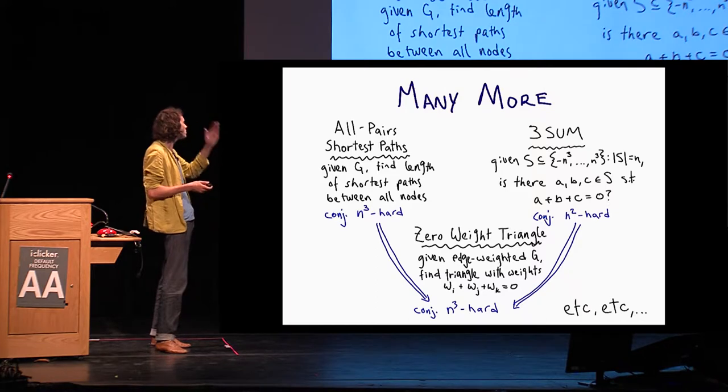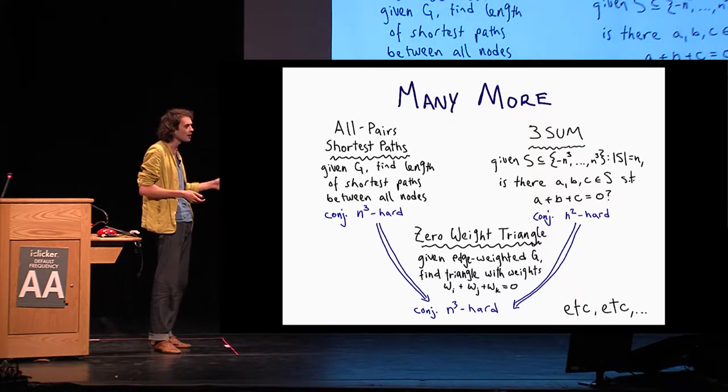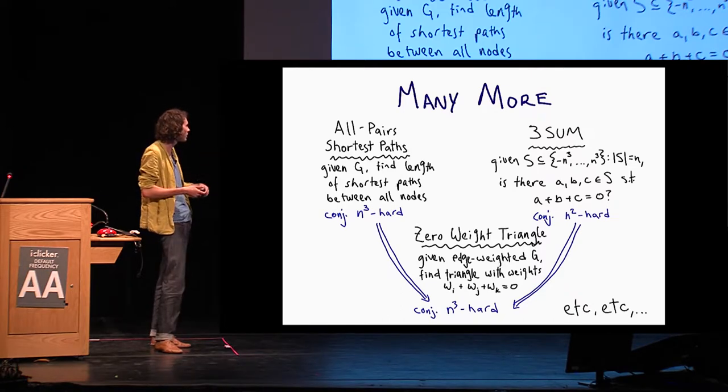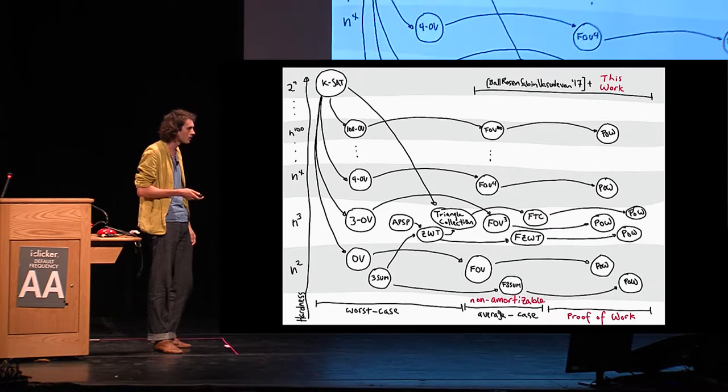There's many other examples. For example, you can generalize the previous problem and consider what is called the K-wise inner product here, which basically involves multiplying componentwise across your vectors. And this problem is conjectured to be n to the K hard. The best you can do is enumerate over all K tuples. This is again implied by SETH. For all constant K, this is implied by SETH. There's even more examples. All pairs shortest path. There's been basically no improvement over the algorithm you learn in algorithms 101. 3SUM, 0-weight triangle. I'm not going to go into the definitions. There's a lot.